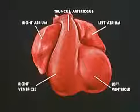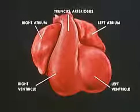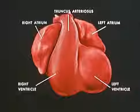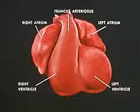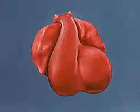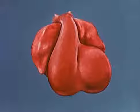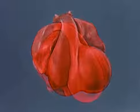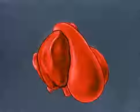A four-chambered heart is formed from this convoluted tube by the development of three septa, partitioning the atria, the ventricles, and the truncus arteriosus. Although these septa develop simultaneously, they will be considered individually. By viewing the heart from the right side, partitioning of the atria and ventricles can be more easily visualized.